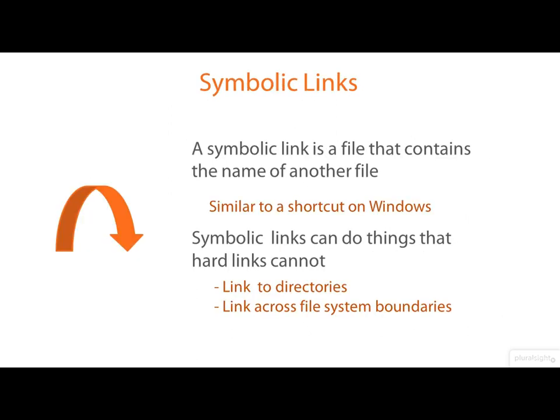There is a different kind of link known as a symbolic link, which doesn't have the restrictions of hard links. A symbolic link is basically a small file, so it has its own inode, but the file just contains the name of another file — sometimes known as the target file. In this sense, symbolic links are a little like shortcuts on Windows. Symbolic links can do things that hard links can't: they can link to directories — though you need to be careful not to abuse that facility — and they can link across file system boundaries.